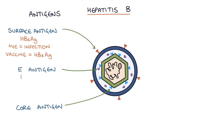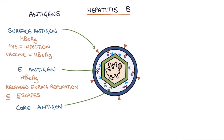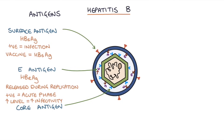The next antigen is the hepatitis B E antigen. The hep B E antigen is found between the core and the surface of the hepatitis virus, and it's released during replication of the virus. Remember: E antigen escapes during replication. Therefore, if the hep B E antigen is present, it implies the patient is in an acute phase of infection where the virus is replicating very quickly. The level of the hep B E antigen correlates with infectivity — if it's higher, they're more infectious to others.